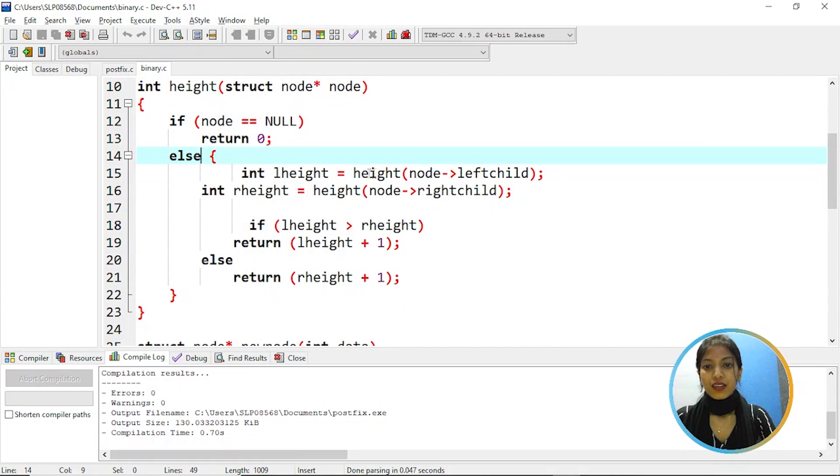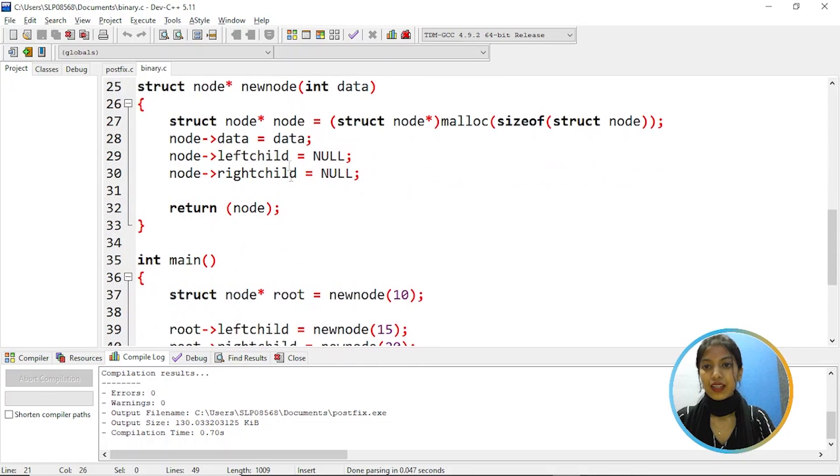Else the height of node's left child is assigned to left height and the height of node's right child is assigned to right height. So if left height is greater than right height then return left height plus one else return right height plus one and then creating the new node and allocating memory for it using malloc function and then assigning data.